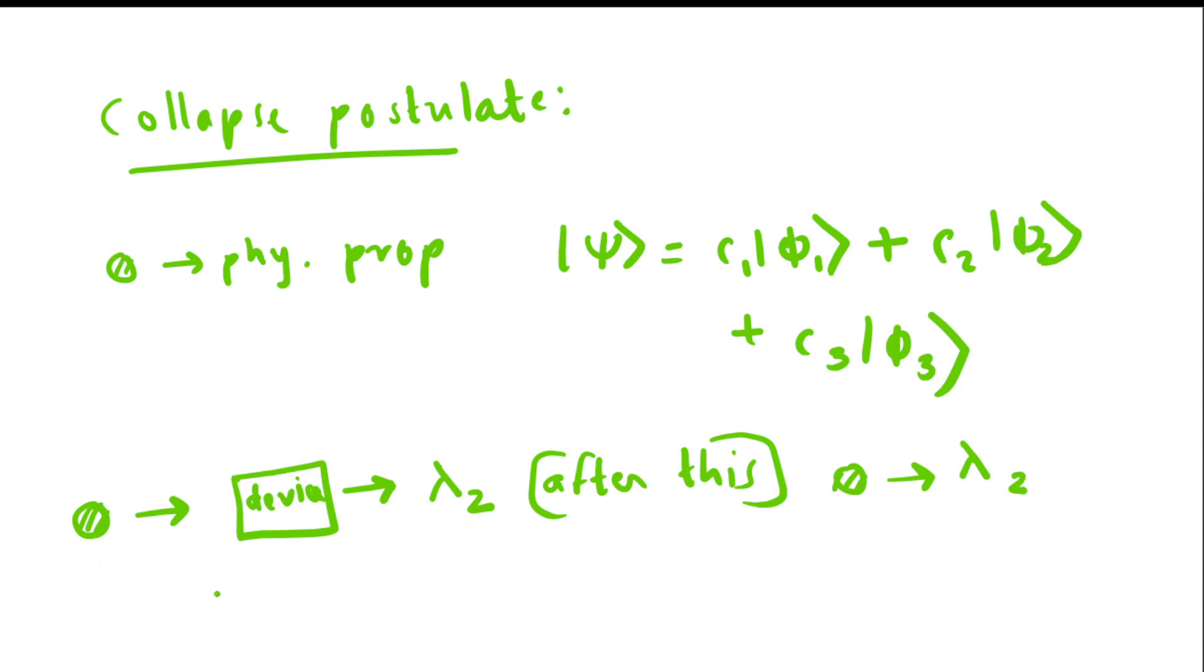The wave function of the particle after measuring is simply phi 2. After this, whatever method you use to measure that particular property, you will always get the same value lambda 2 because the wave function of the particle has collapsed into that particular eigenstate. That is the simple explanation for collapse postulate.